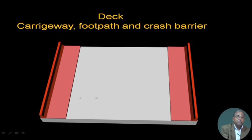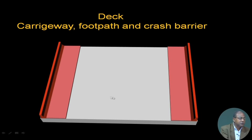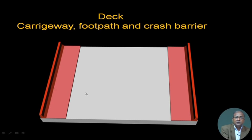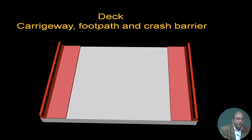As I have shown you many times, we are considering the deck. You require a carriageway, footpath, and crash barrier. Vehicles use the middle carriageway part. We have considered footpaths on both sides and crash barriers on both sides. We can also have railing, which we shall cover at a different time.